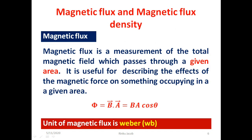Now we discuss about magnetic flux. Magnetic flux is a measurement of the total magnetic field which passes through a given area. The area considered here can be of any value. It is useful for describing the effects of magnetic force on something occupying a given area. The magnetic flux is mathematically denoted by phi and is equal to the dot product of the magnetic field vector and the area vector. It is a scalar quantity. The magnitude is B A cos theta, where theta is the angle between the magnetic field vector passing through the area and the area vector. The unit of magnetic flux is Weber.